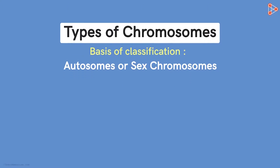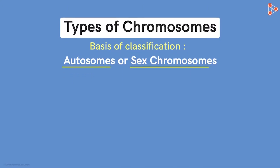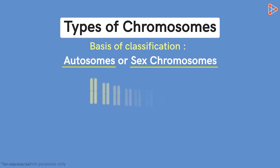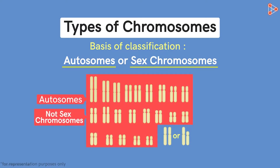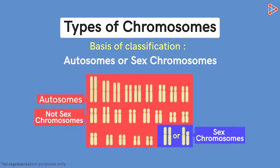Now the next type of classification. Eukaryotic chromosomes are classified into autosomes and sex chromosomes. In a typical human karyotype, the first 22 pairs represent the autosomes — that is, they have no function to deal with the sex of the individual. The last pair, however, determines the sex of the person. If the two are identical, that is both X and X, then the individual is a female. And if one is X and the other is Y, the individual is a male.